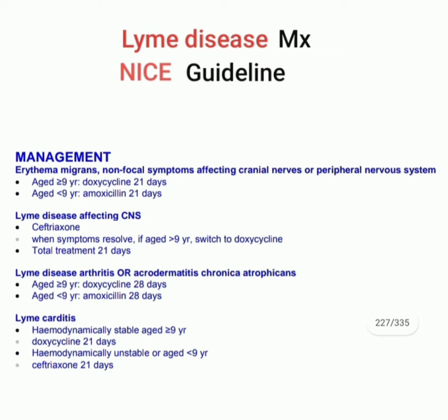Second: if Lyme disease is affecting the central nervous system, we start treatment with ceftriaxone. When symptoms resolve, if age is more than nine years, switch to doxycycline. The total treatment duration is 21 days.